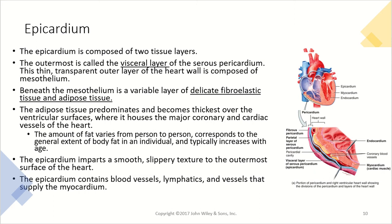Starting with the epicardium — it is composed of two tissue layers. The outermost is called the visceral layer of the serous pericardium, a thin, transparent outer layer of the heart wall composed of mesothelium. Beneath that mesothelium is a variable layer of delicate fibroelastic tissue as well as adipose tissue. The adipose tissue predominates and becomes thickest over the ventricular surface, where it houses the major coronary and cardiac vessels. The amount of fat varies from person to person, corresponding to general body fat, and typically increases with age.